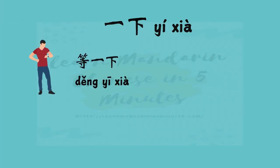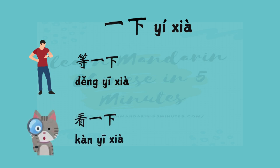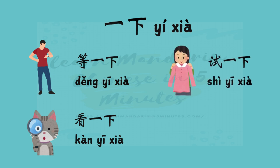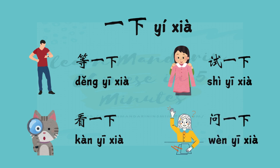Now let's take a look at a few examples that will make you sound like a native speaker. For example, 等一下 means wait a moment — when you see someone leaving and you want them to wait. You can say 帮我看一下这表 to ask a friend to have a look at a watch. You can say 去试一下 to ask someone to try on a dress. When you have a quick question, you can say 问一下, 我想问一下, or 请问一下.